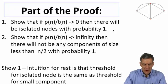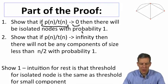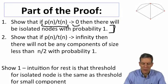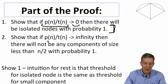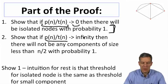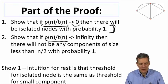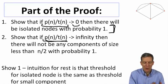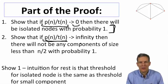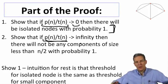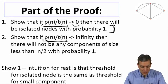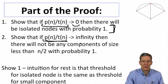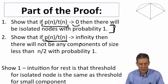What we can show is that if P(N) compared to this threshold goes to zero — so if P is much smaller than this threshold — then there's going to be isolated nodes with probability 1. And if there are isolated nodes, the network certainly can't be connected. Whereas if P(N) compared to T(N) goes to infinity, then there can't be any components with less than half the nodes. So all components have to have more than half the nodes, which basically means there has to be one giant component.